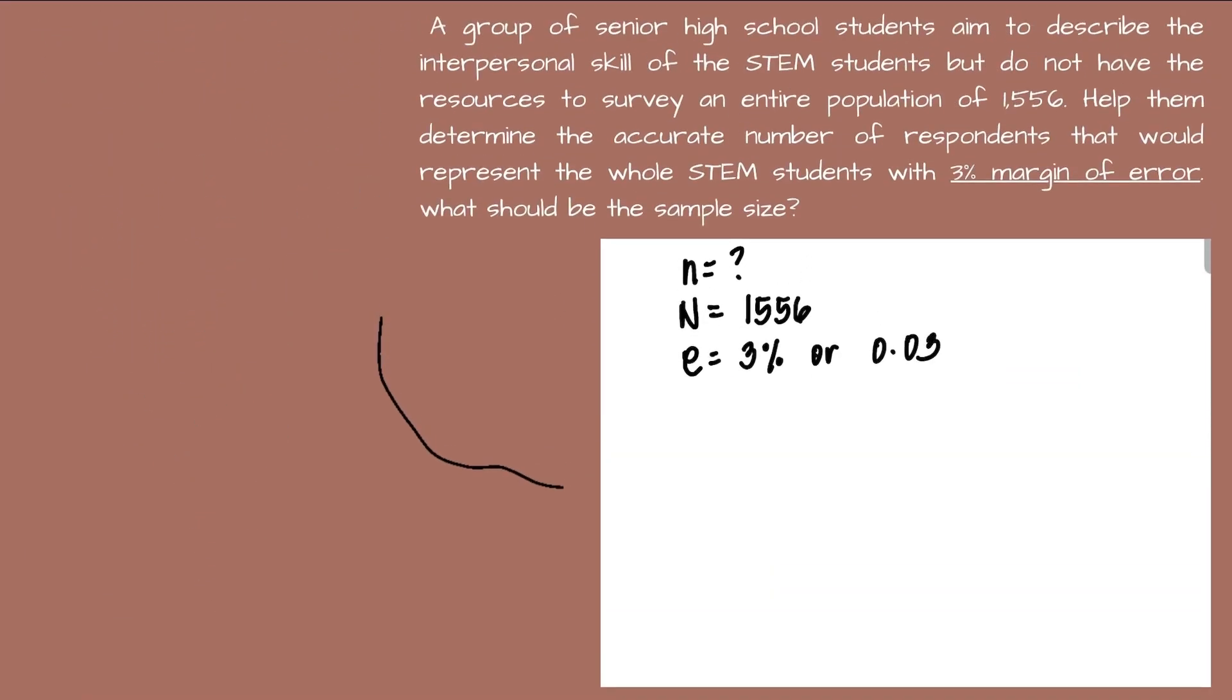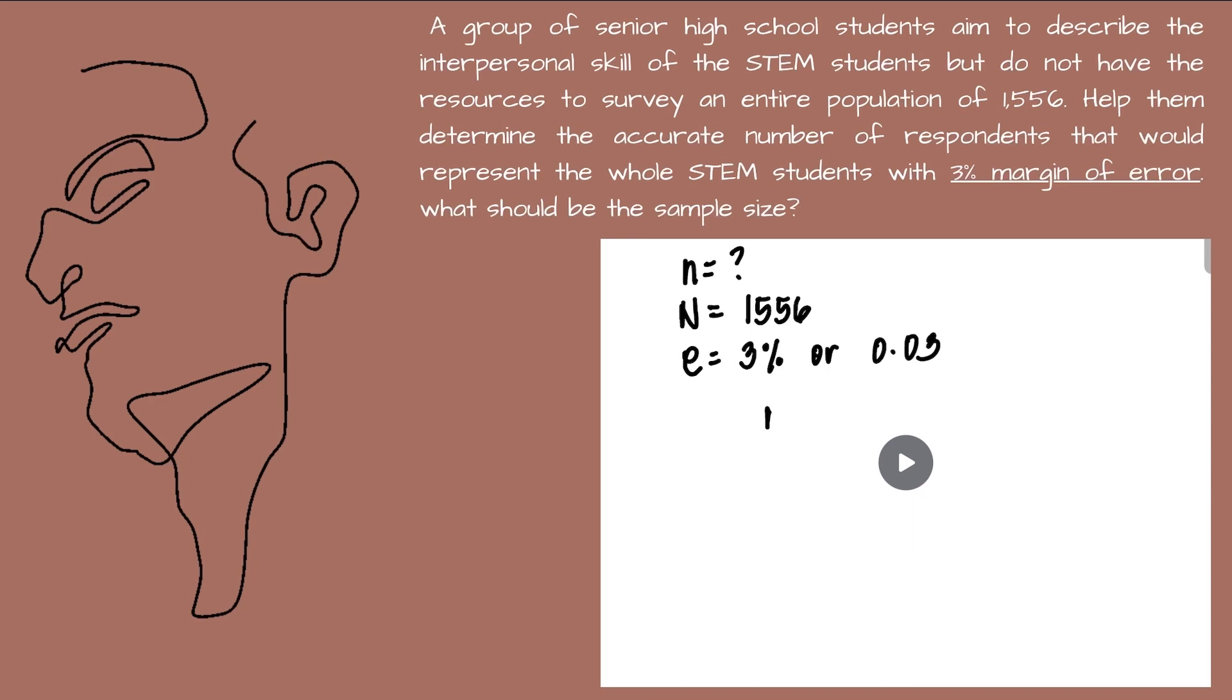Another example: a group of senior high school students that aim to describe the interpersonal skills of the STEM students, but do not have the resources to survey an entire population of 1,556. Help them determine the accurate number of respondents that will represent the whole STEM students with 3% margin of error. What shall be the sample size? Using the given, we have the capital N, the total number of population which is 1,556, with the margin of error 3% or 0.03.